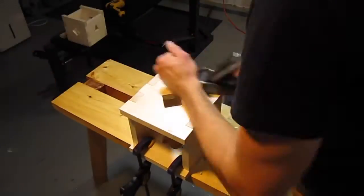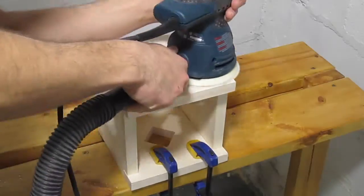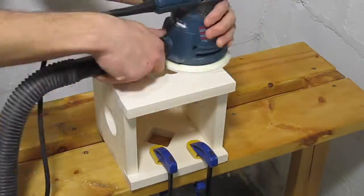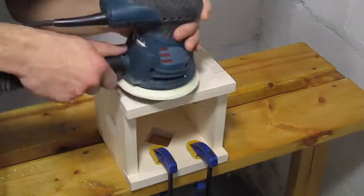After the glue dried, I used my hand plane to flush all the surfaces. Then I used a random orbital sander to really smooth the sides. With an aggressive grit, it's easy to remove excess material quickly, so I probably could have skipped the hand planing altogether.